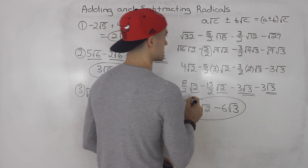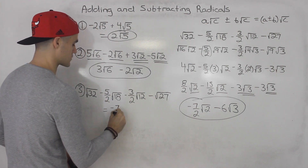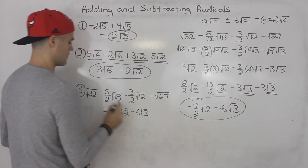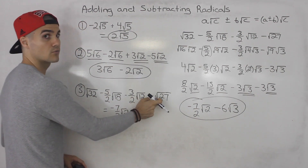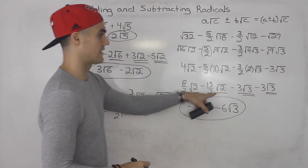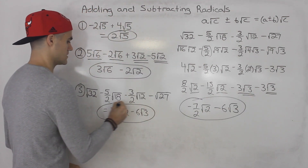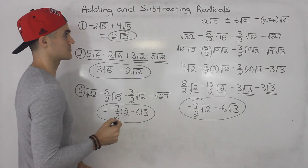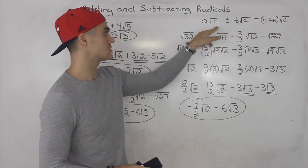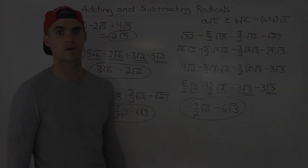So be on the lookout for those scenarios where initially there are no common radicals, no like terms, but when you simplify first, you end up having like terms and they get simplified further. That's how you add and subtract radicals: look for radicals that are the same, simplify first, then add or subtract the coefficients in front. Thank you.